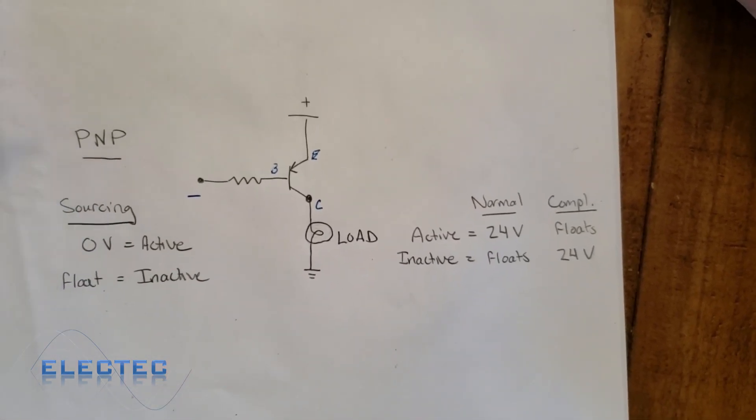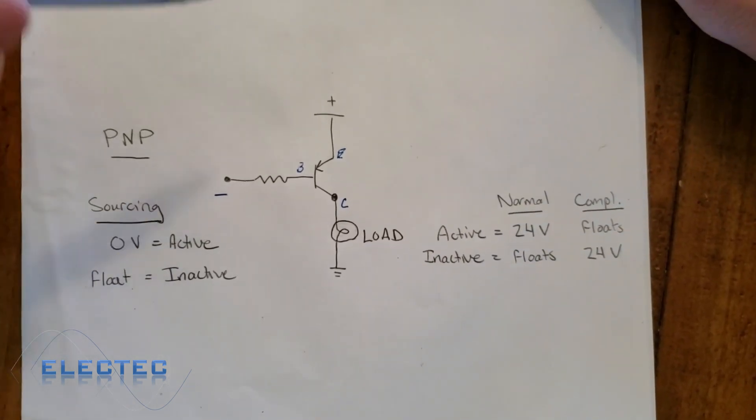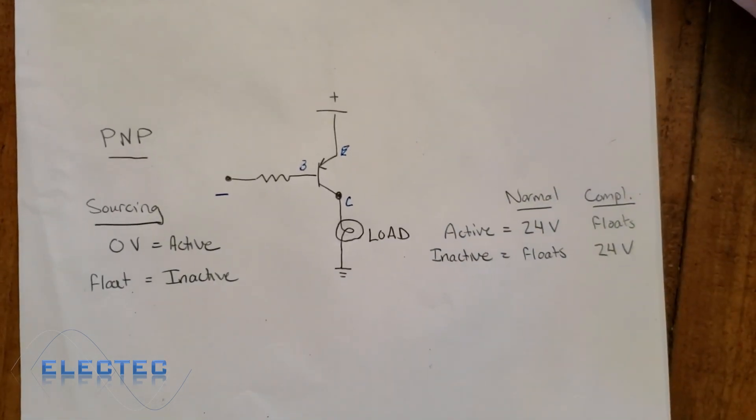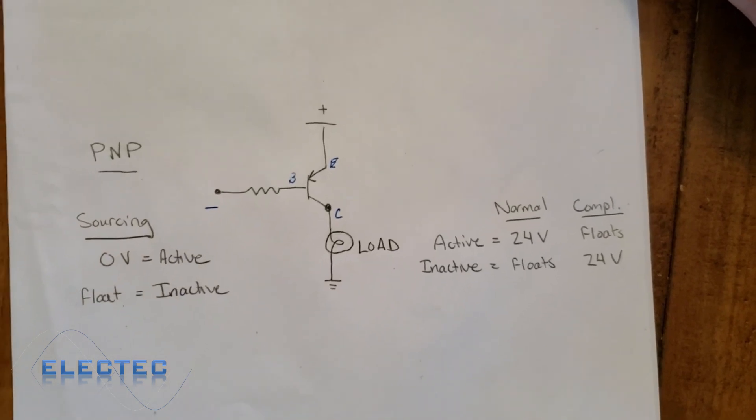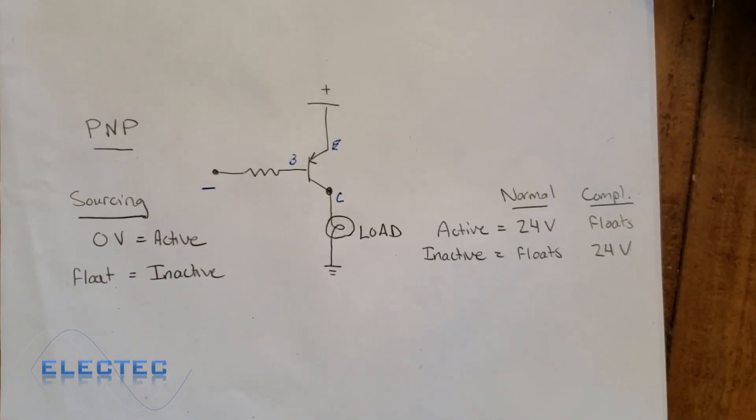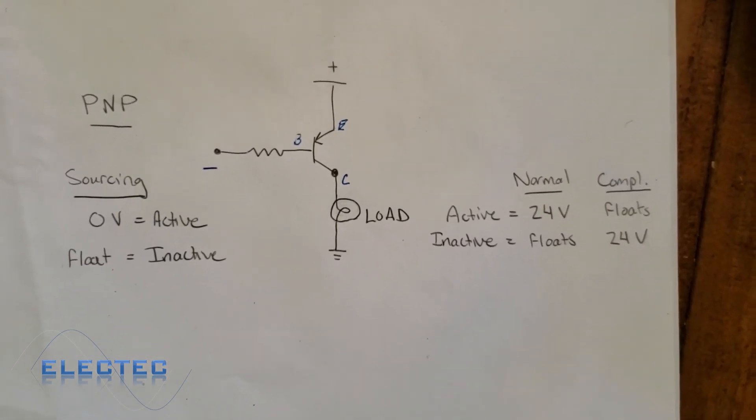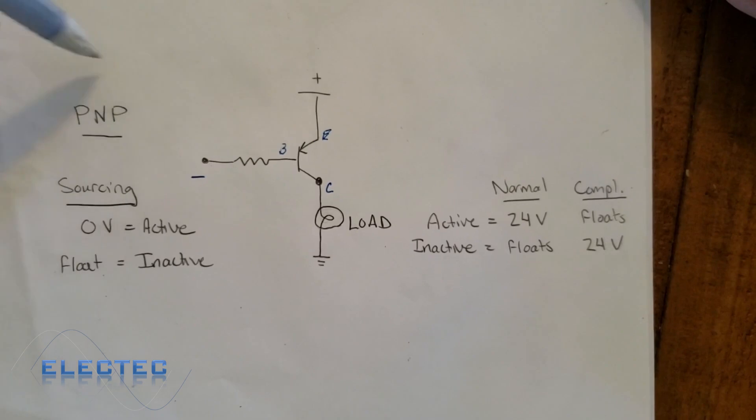If you need 24 volts, which is more common for the US standard, you would use PNP sensors. PNP sensors work directly with NPN inputs. So if you have a PLC that has inputs, or sinking inputs, they call it, that means you need a sourcing sensor to activate it. A sourcing sensor would be a PNP sensor.